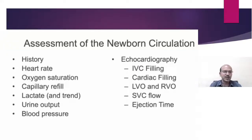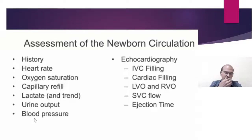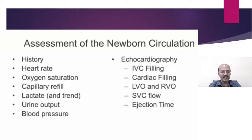How do we assess the newborn circulation? We have the clinical parameters, the history, and assessment including heart rate, saturation, and capillary refill. Lactate as a single measure — especially in the postnatal period immediately after delivery — is useful as a trend: if it is high due to labour-related processes, it tends to drop once the circulation is better. Urine output is important but it is a delayed measure. Blood pressure gives good information but is a late manifestation. Ideally we should pick up when heart rate starts going up and the baby's sensorium gets altered.